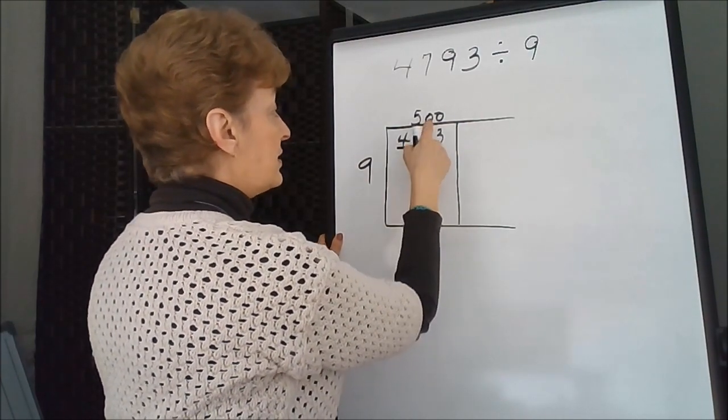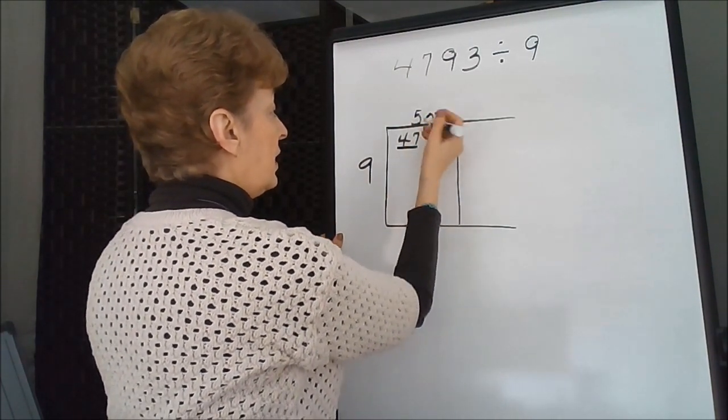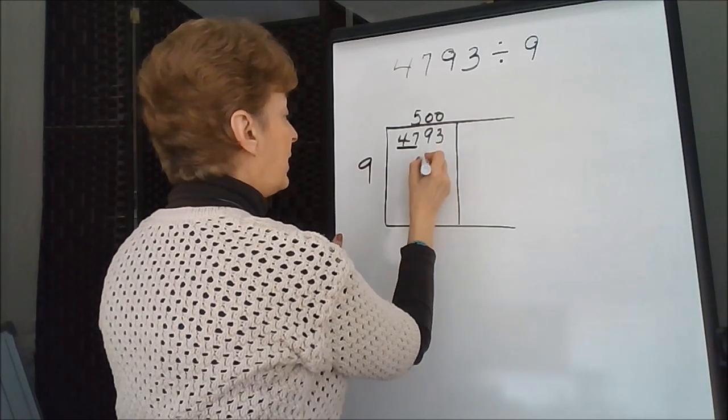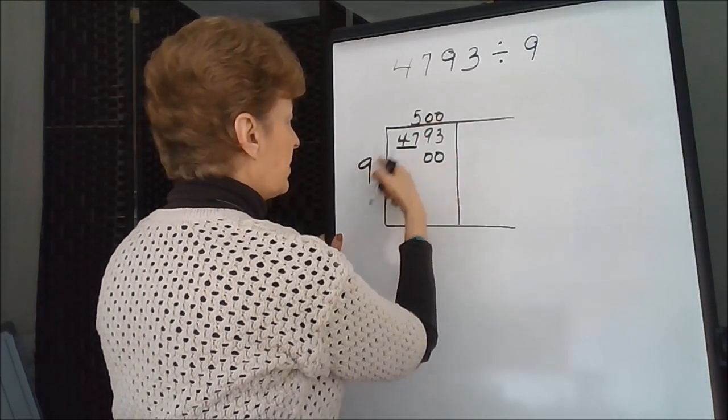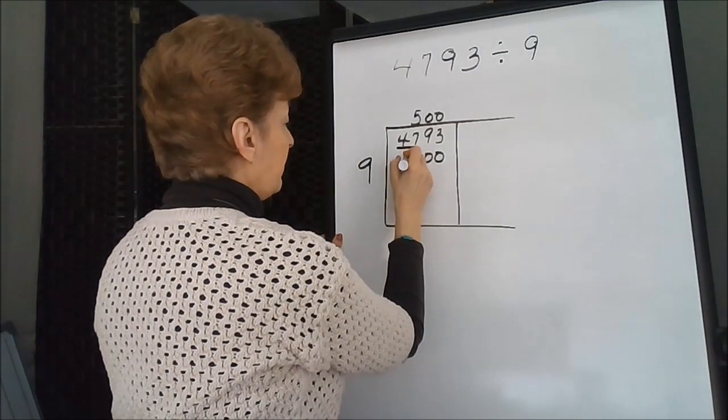So I will put a 500 here, because we are saying that 9 goes into 47, and the 7 is in the 100 spot. So we have to put our two zeros on. Now we'll multiply it back.